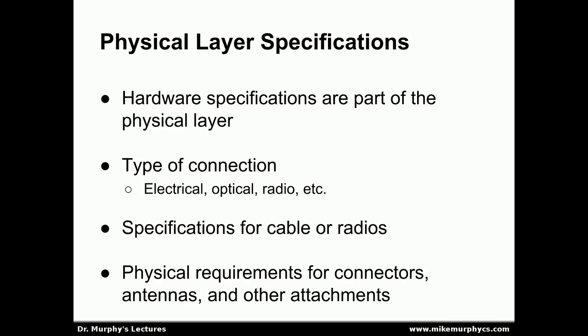Conceptually, in addition to providing the hardware, the physical layer also specifies certain properties of that hardware. Things we have to specify include the type of connection: electrical, optical, or wireless radio. We need to provide specifications for what kind of cable or radio will be used. For example, with Ethernet we specify twisted pair cabling; with fiber optic, a type of fiber optic cable; with a wireless network, a particular type of radio. We also need to give physical requirements for the connectors, the antennas, and any other attachments used with these cables.